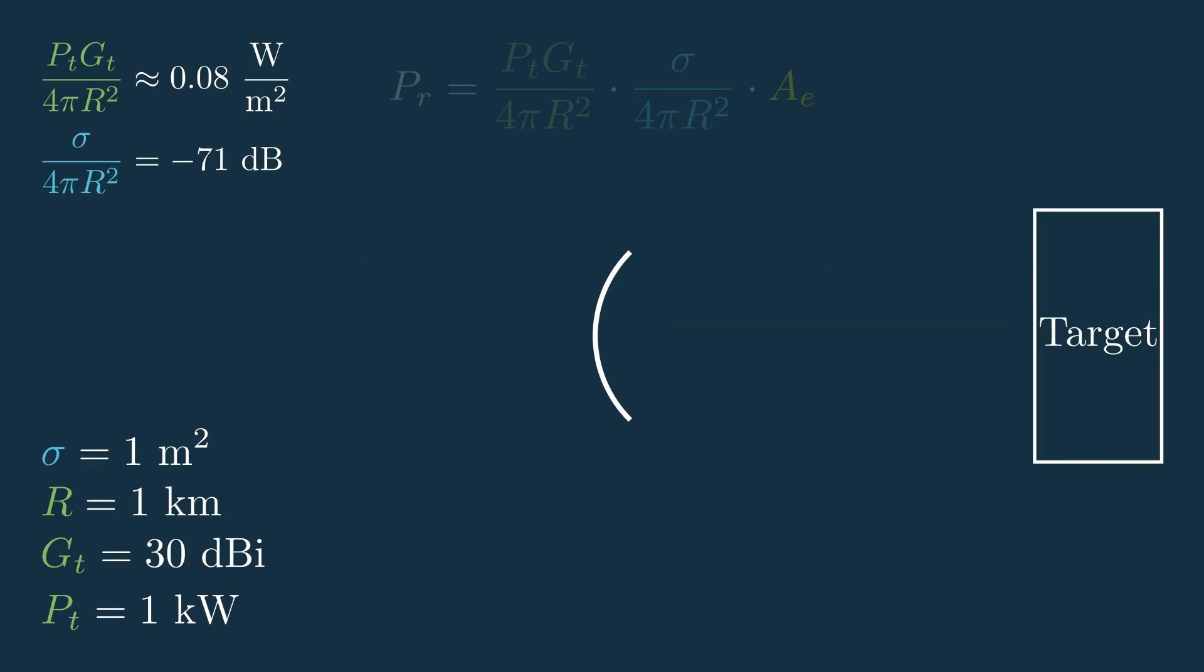So the last term. This is known as the effective aperture, and it basically represents how effective our antenna is at receiving signals. You can relate it to the receive antenna gain and the frequency of the signal it's receiving by this equation. So we could just rearrange this to get an equation for our effective aperture.